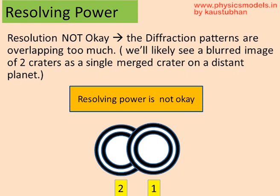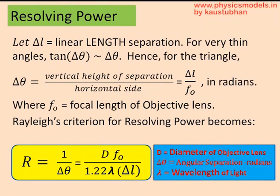In this way, Rayleigh laid down the criterion to define resolving power, taking into account the wavelength and diffraction phenomena. Sometimes, instead of delta theta, we may have delta L — let's say the craters are 5 miles apart, just for argument's sake, so that's the linear length. In that case, the equation can be derived in terms of delta L and F₀, where F₀ is the focal length of the objective lens. It's more of trigonometry here and you can go through it a bit later.